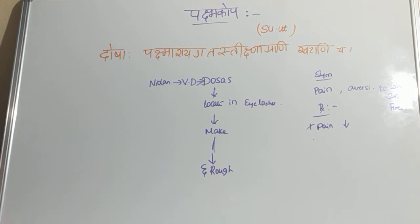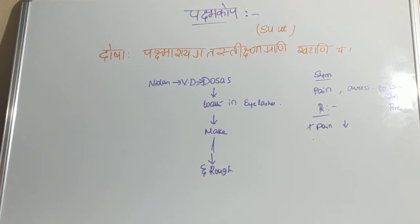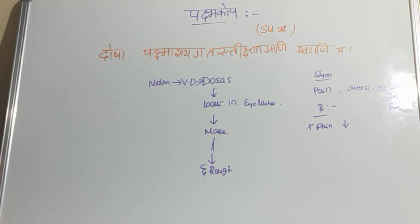First, write that Pakshmakopa is a disease of eyelashes. Then move on to the shloka — the reference is Sushruta Uttaratantra. The shloka states: 'Dosha pakshma shegata tishnagrani kharani cha.' Due to nidana sevana, the dosha will get aggravated and move to the pakshma (eyelashes), making them into sharp points — tekshna — and rough (kara). This is the definition and meaning of Pakshmakopa.